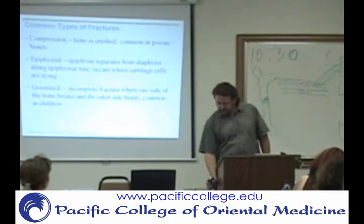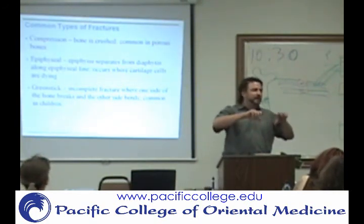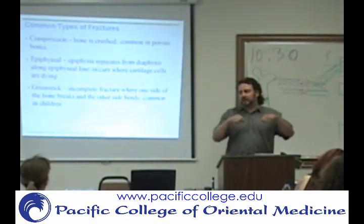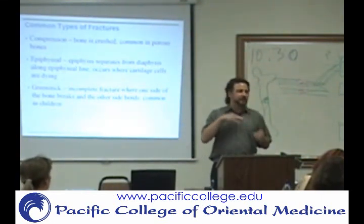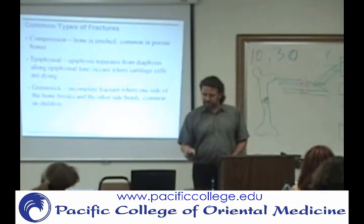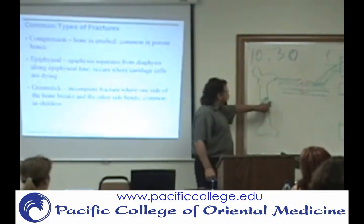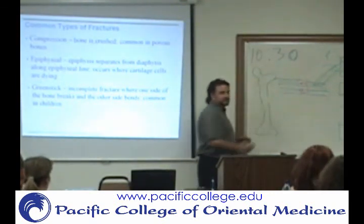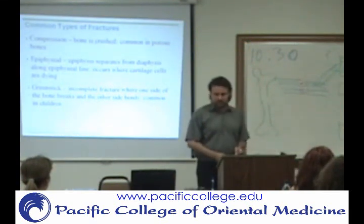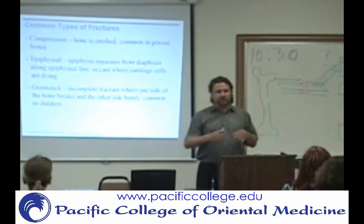A greenstick fracture is like if you've ever tried to take a green branch of a tree and break it — it's going to bend but it doesn't snap. A greenstick fracture is where the bone kind of bends and doesn't really completely snap or fracture. It'll break on one side and the other side stays intact. This is going to be common in kids because their bones are a little more flexible.